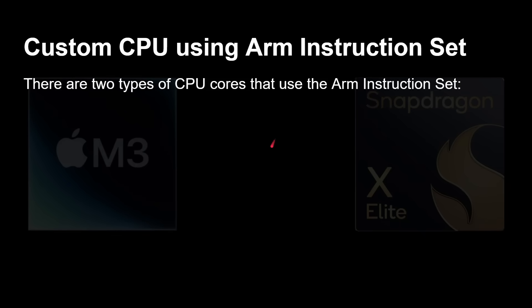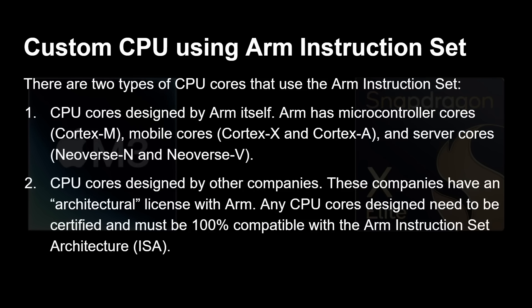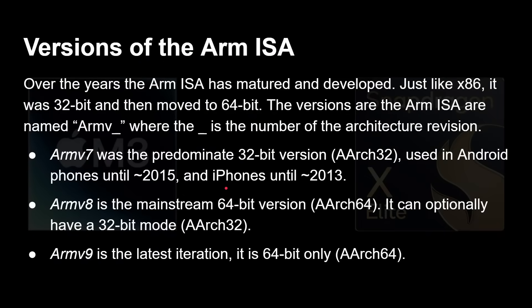What do I mean by a custom CPU using the ARM instruction set? There are two types: CPU cores designed by ARM itself — including Cortex-M microcontroller cores, Cortex-A and Cortex-X mobile cores, and Neoverse server cores — and CPU cores designed by other companies who hold an architectural license with ARM. Any custom design must be certified and 100% compatible with the ARM instruction set architecture. Apple and Qualcomm both have architectural licenses, meaning they've designed their own custom, fully ARM-compatible processors — not simply tweaked versions of Cortex-X cores.